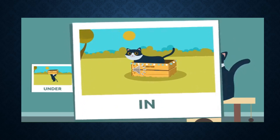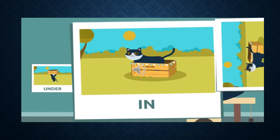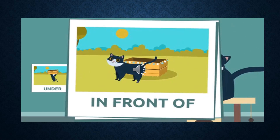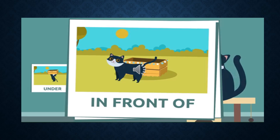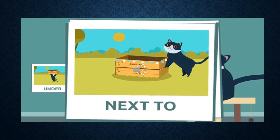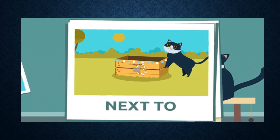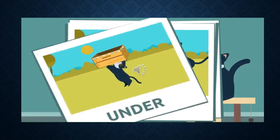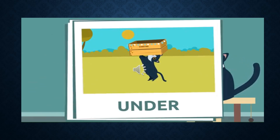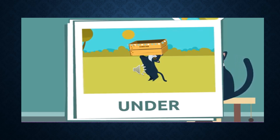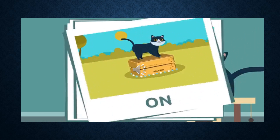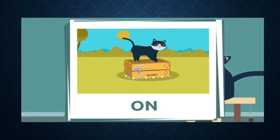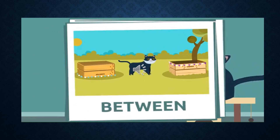In the box. The cat is in front of the box. Next to the box. Under the box. On top of the box. Between the boxes.